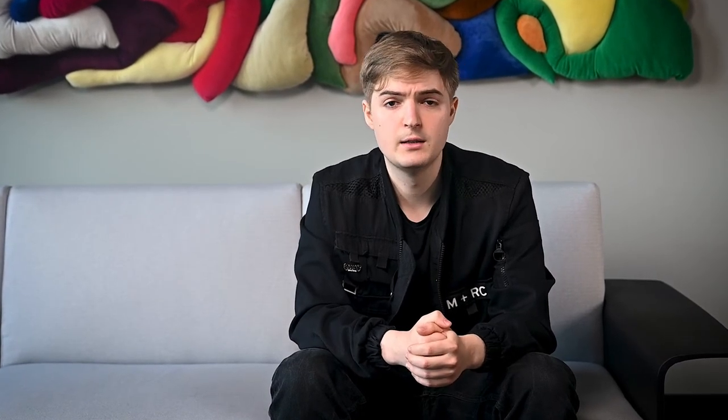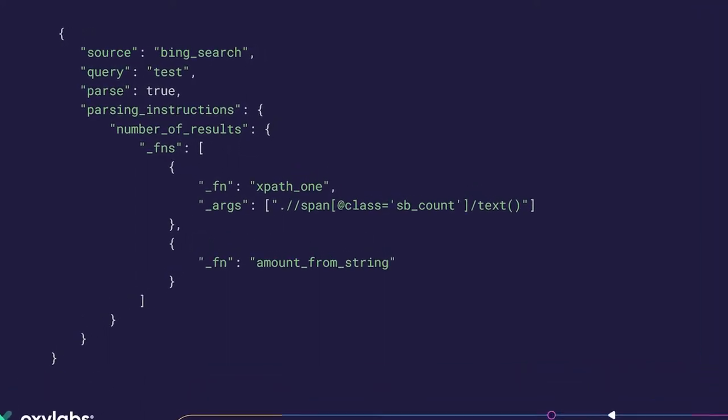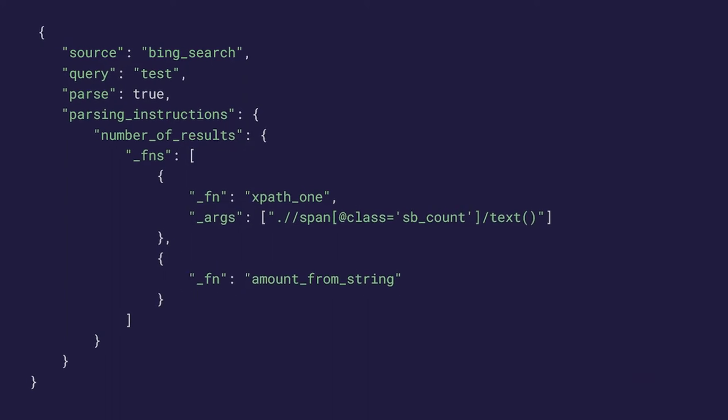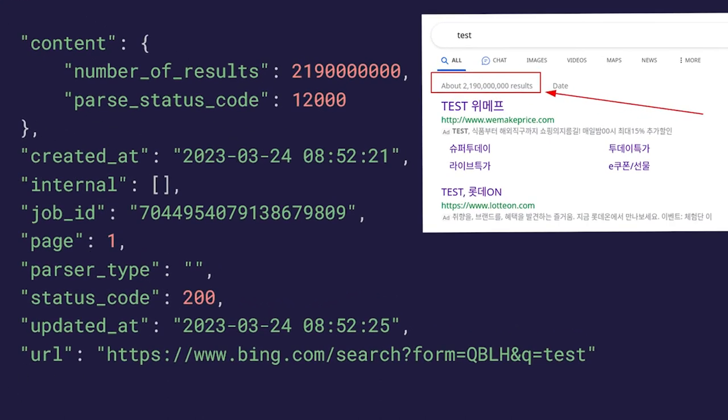Crucially, custom parser not only offers text extraction from scraped HTML, but it can also execute basic data processing functions. For example, the previously described parsing instructions extract the number of results as text with extra keywords you may not need. If you want to get the number of results in numeric data type, you can reuse the same parsing instructions and add the amount_from_string function to the existing pipeline. The parse result should then look like this — and we can see that it parsed the document accurately.